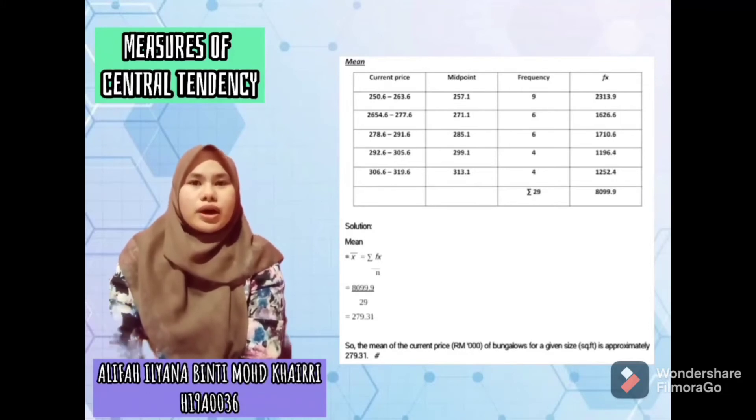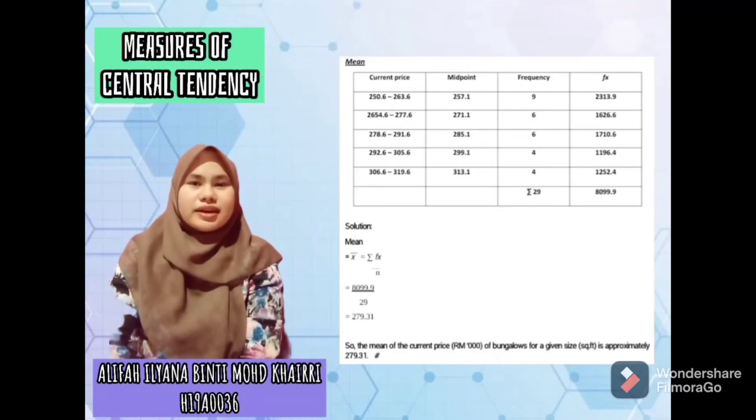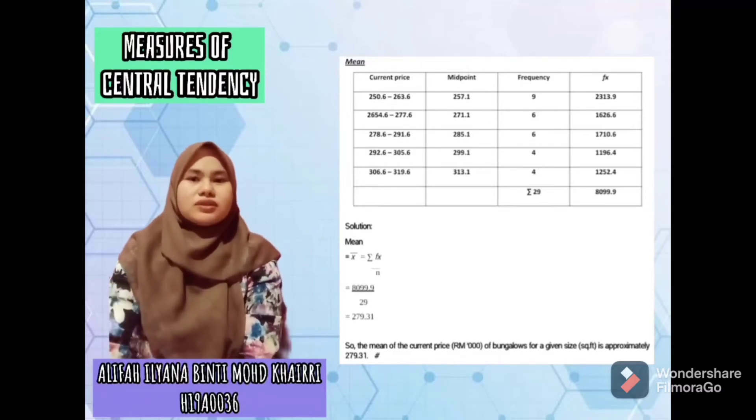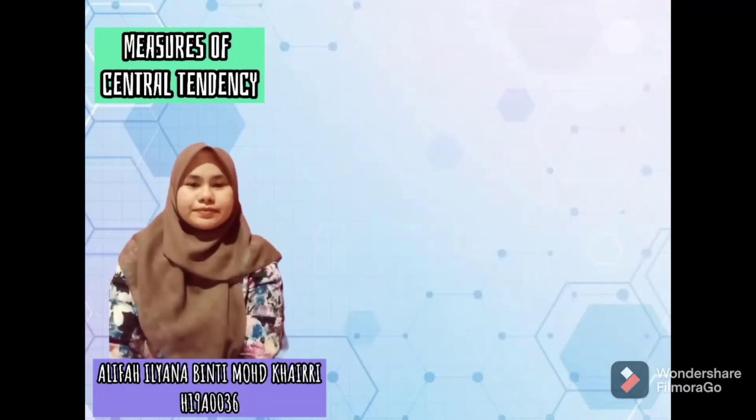Then divide by the total number of classes, and you will get the answer for the mean, which is 279.31.